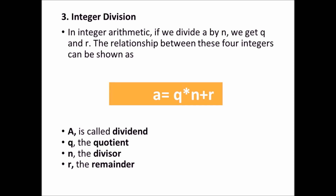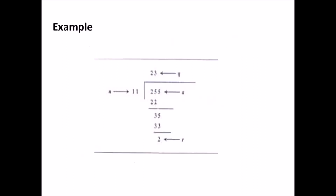Here is an important note: integer division is not an operation, because the result of dividing A by N is two integers, Q and R; hence we call it a division relation. For example, consider A equals 255 and N equals 11. We can find Q and R using the division algorithm we have learned in arithmetic back in school. We get Q equals 23 and R equals 2.